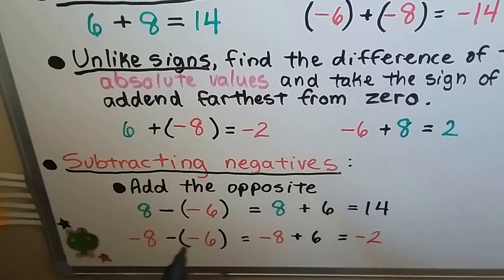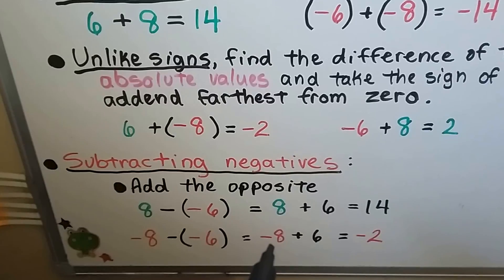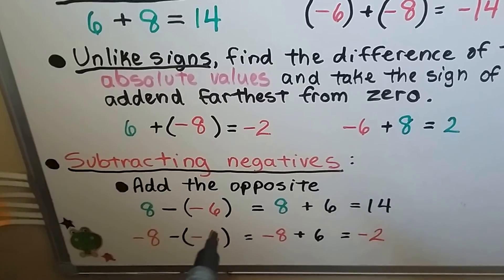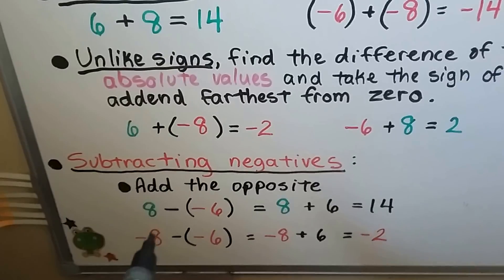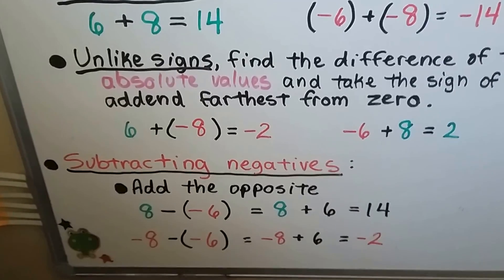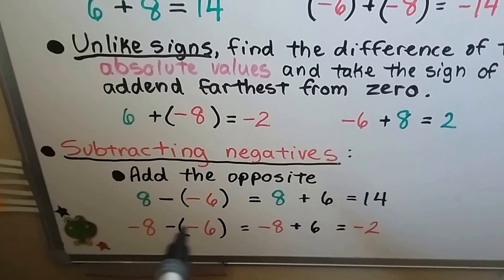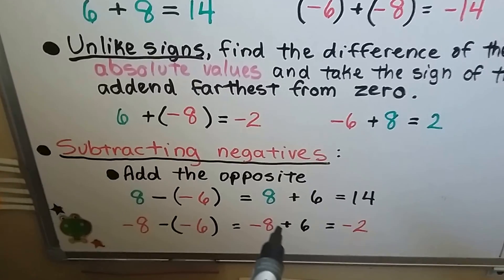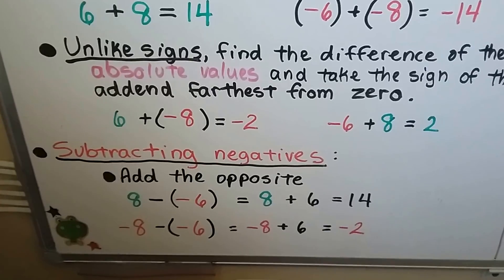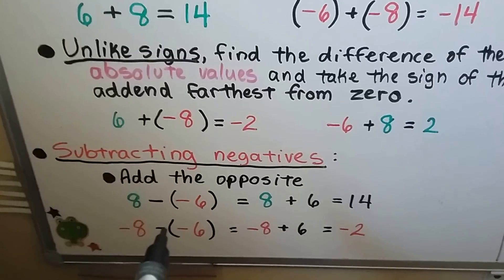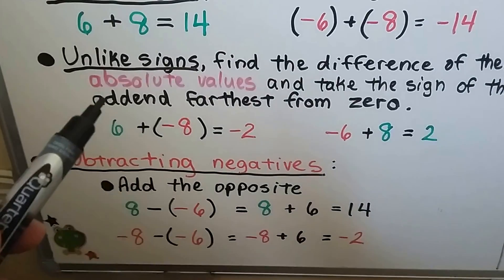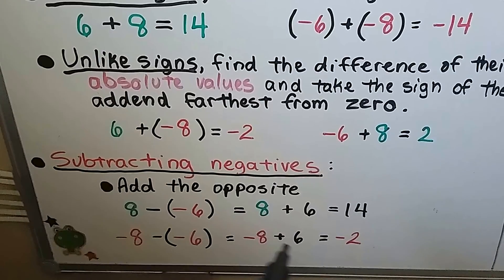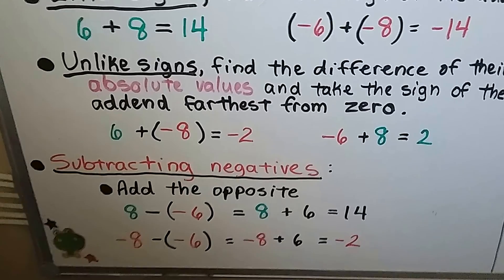If we have a negative 8 minus a negative 6, we add the opposite, so now we have negative 8 plus a positive 6. The minuend stays the same. It's the subtrahend and the operation sign that are going to change — the second number and the operation sign change. So if we add the opposite, we're going to be adding a positive 6. Following the rule for unlike signs, we find the difference, which is 2, and take the sign of the one farthest from zero.